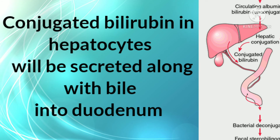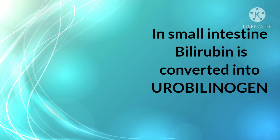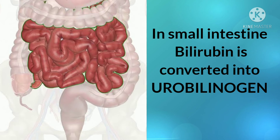This conjugated bilirubin, which is in the hepatocytes, is secreted along with the bile into the duodenum. From the duodenum, it enters the small intestine where it is converted into urobilinogen.